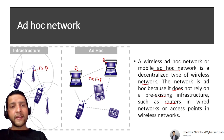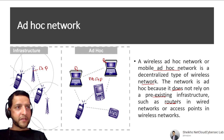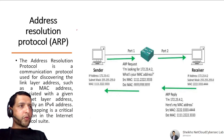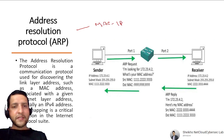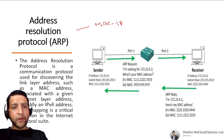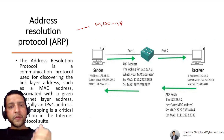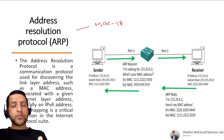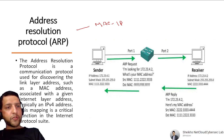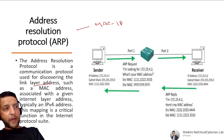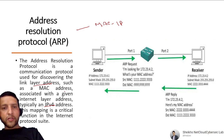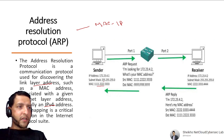Address Resolution Protocol (ARP) is the mapping of MAC and IP addresses. When a device needs to find the MAC address for a known IP, it sends a broadcast: 'Whoever has IP address X, please send me your MAC.' The ARP protocol is used for discovering the link layer address (MAC) associated with a given network layer address (IPv4). This is a critical function in the Internet Protocol suite.